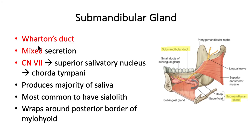This gland produces mixed serous and mucous secretion, and it's powered by cranial nerve 7, the facial nerve. Those nerve fibers originate from the superior salivatory nucleus — not the inferior salivatory nucleus — and the chorda tympani carries many of those fibers to the gland. The submandibular gland produces the majority of saliva, though it's not the largest gland in size. It's also the most common site for a sialolith, which is a calcification within a salivary gland. Its bulk is below the mylohyoid muscle, with a small portion wrapping around the back, so it occupies both the sublingual space above and the submandibular space below the mylohyoid.